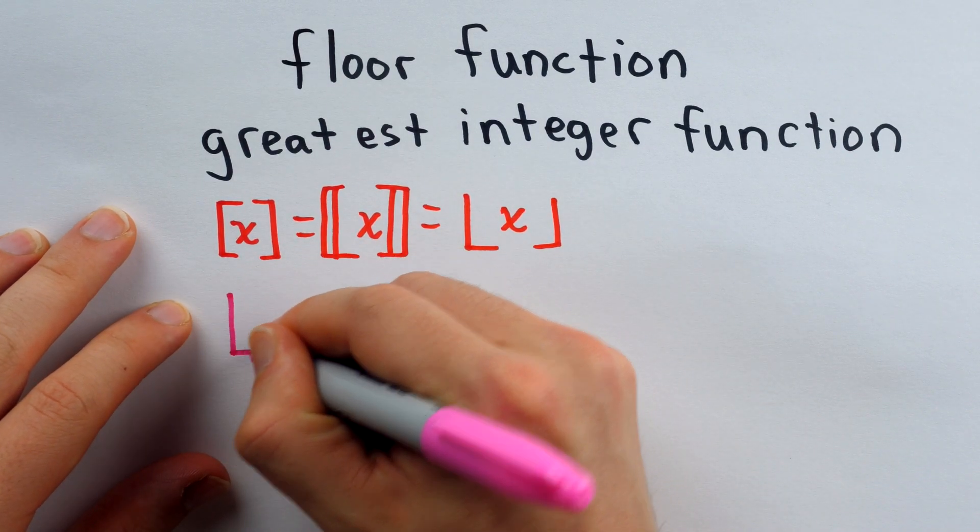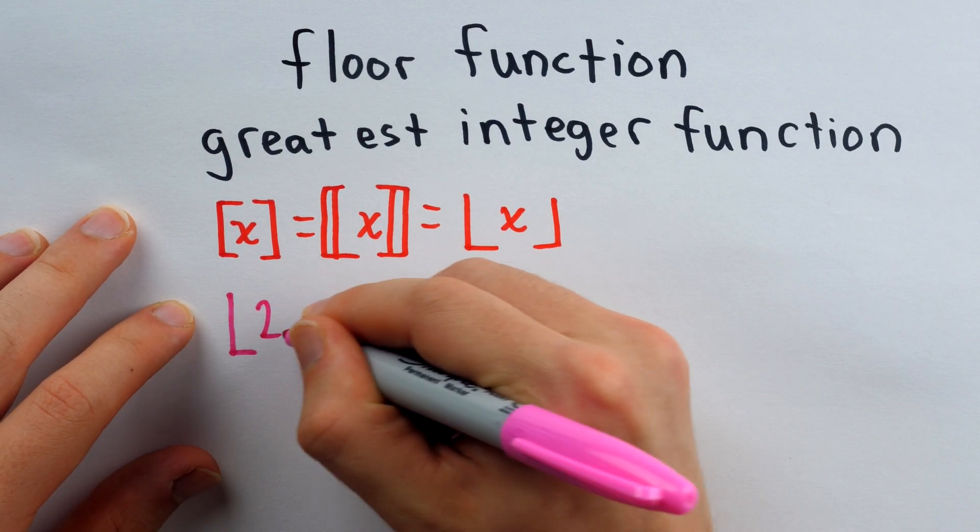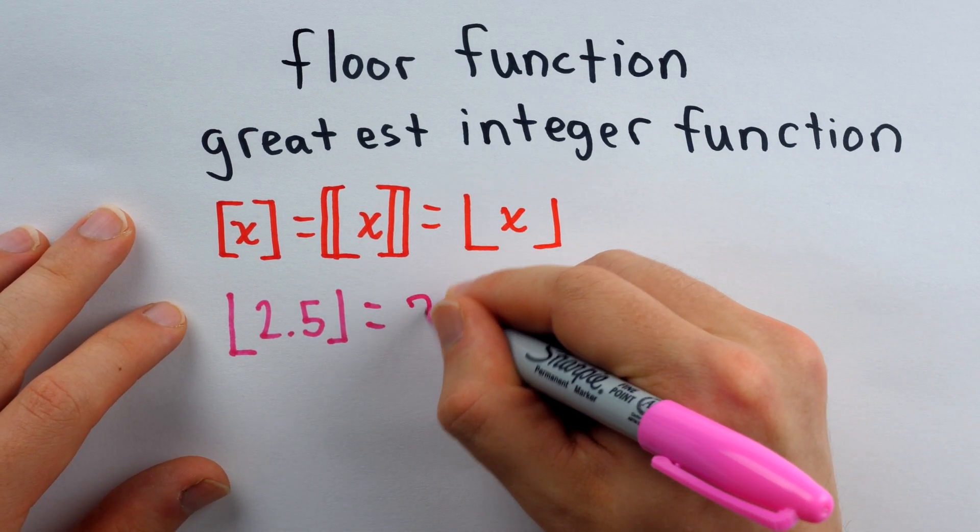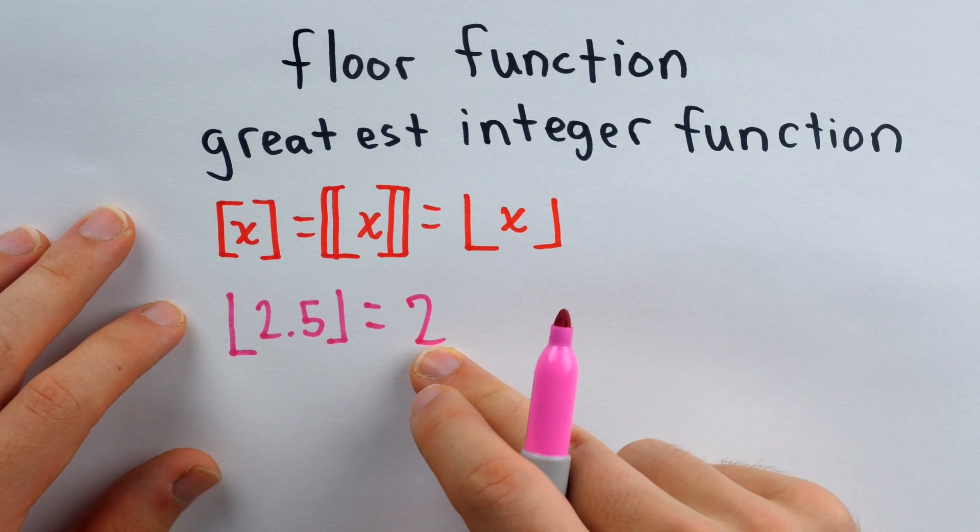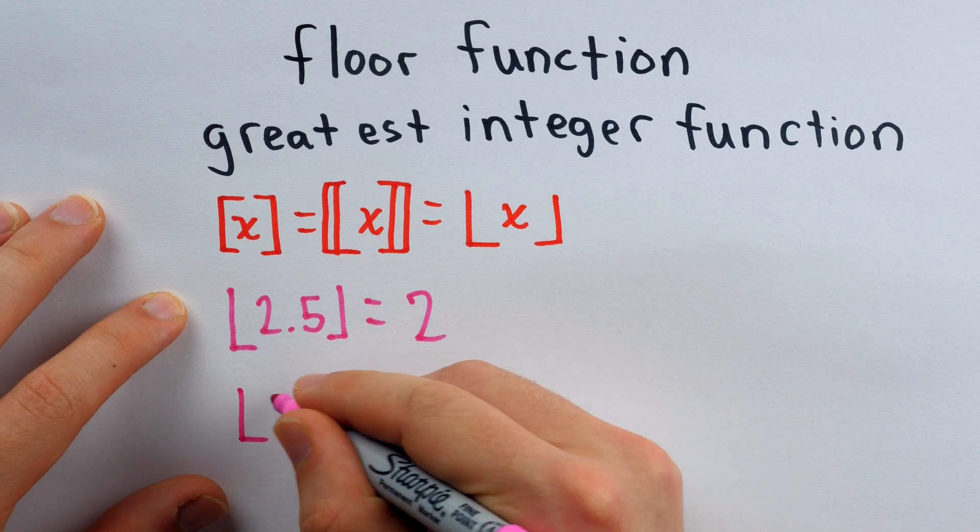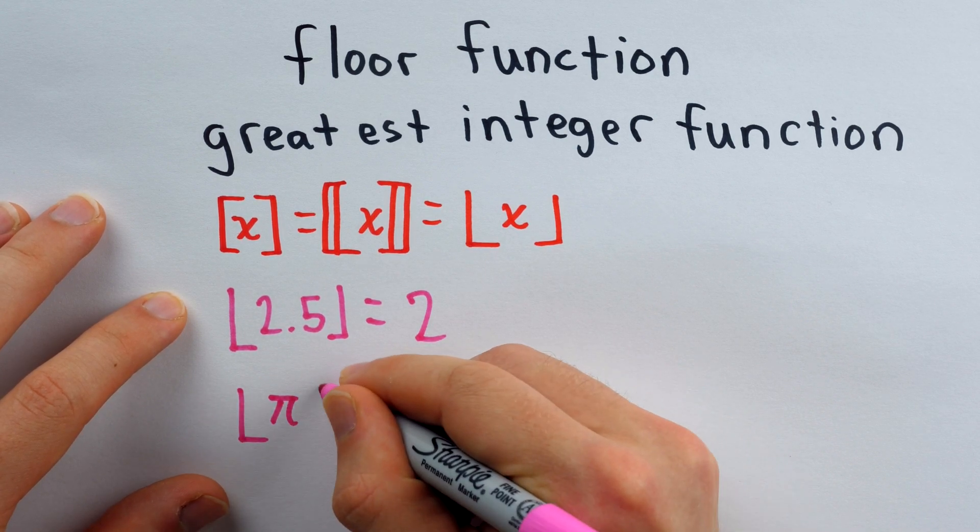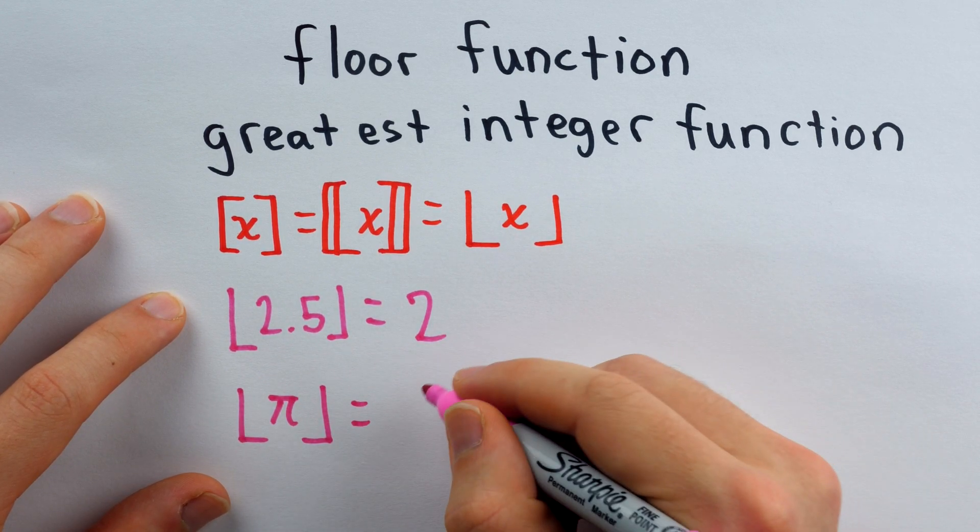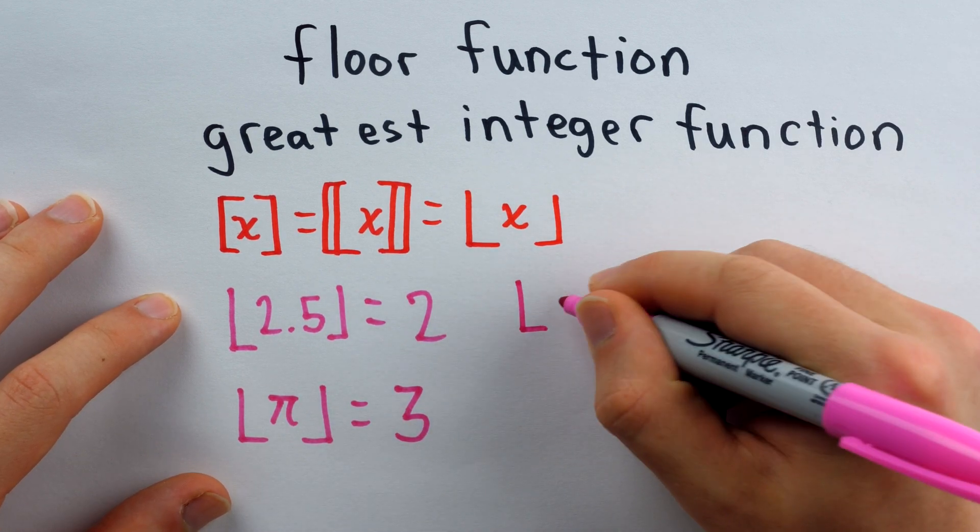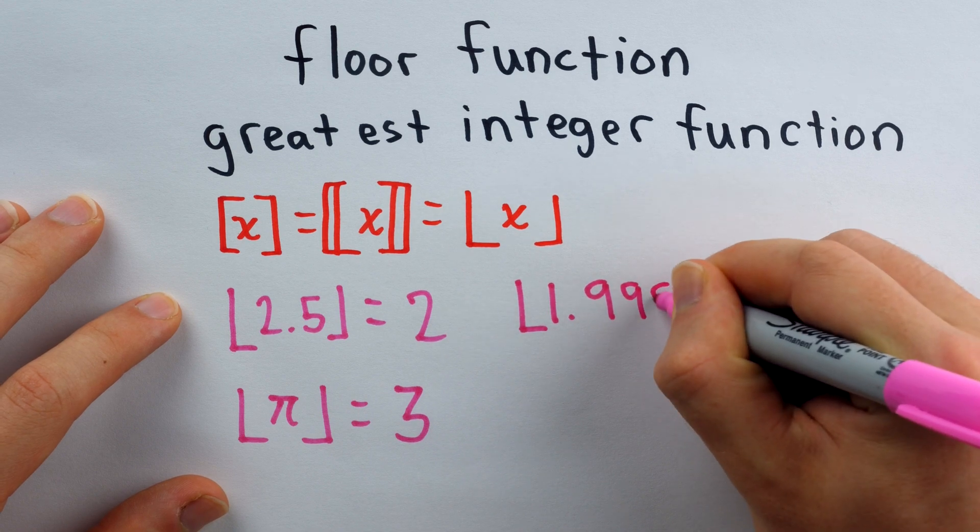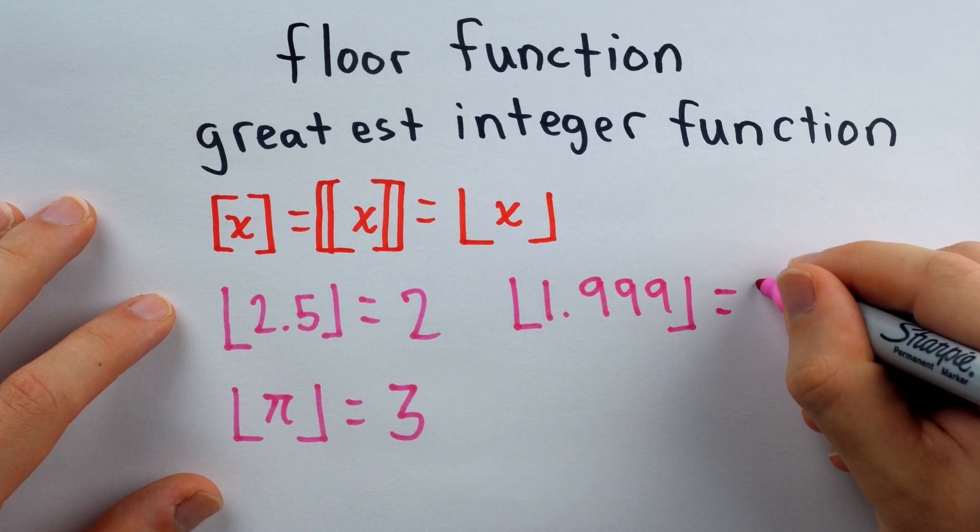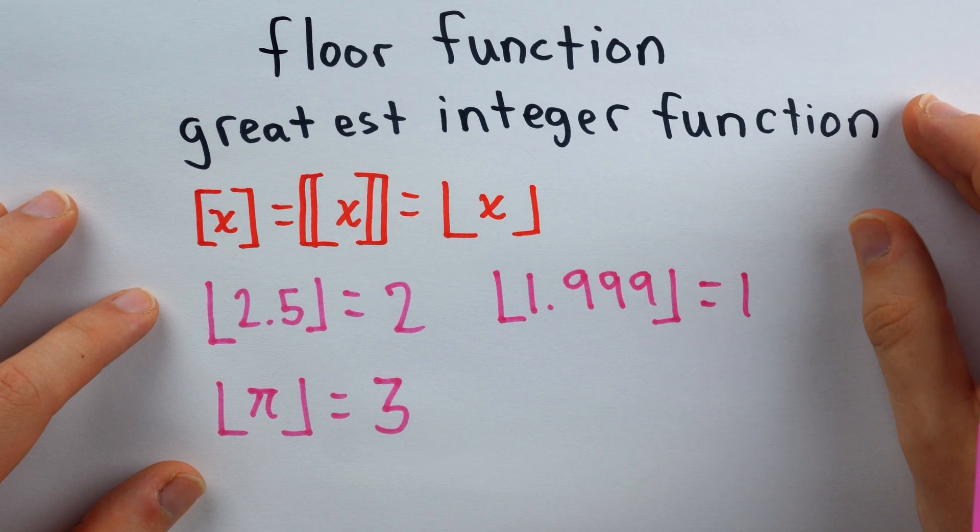For example, the floor function of 2.5 would round 2.5 down to 2. 2 is the greatest integer that's less than or equal to 2.5. Another example would be π. Plugging π into the floor function would round π down to 3. Even if the input is really close to the next integer, like 1.999, if you plug that into the floor function, it rounds it down to 1.